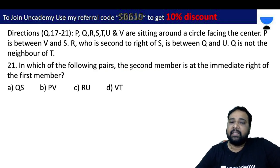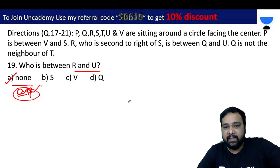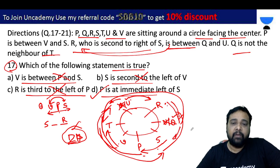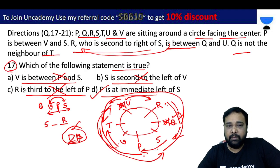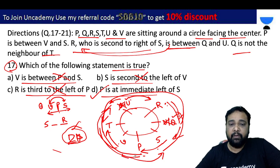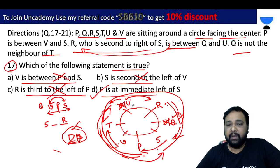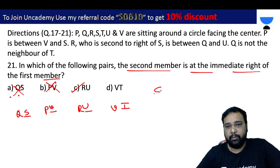Problem 21: In which of the following pairs is the second person at the immediate right of the first person? Checking: Q's immediate right is V. So the pair where the second member is at the immediate right of the first — checking option with U: the answer is C. Only option C is the right answer for problem number 21.